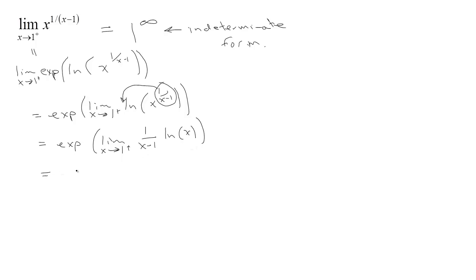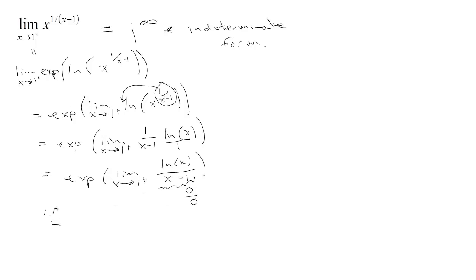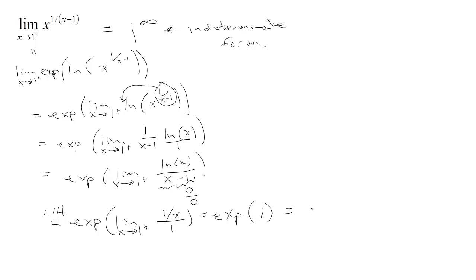So we have e to the limit as x tends to 1 from above of ln(x) over (x−1). This limit inside — as x tends to 1 from above — natural log is going to 0, and x minus 1 is approaching 0 as well. So now we have a 0 over 0 form where L'Hôpital's applies. The derivative of ln(x) is 1/x, and the derivative of (x−1) is just 1. So we're talking about e to the limit, which is 1/1 = 1. So e to the 1 — the answer is e. The limit is e.